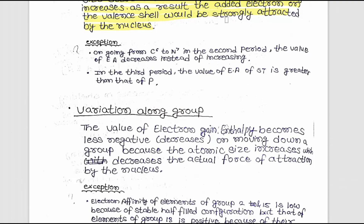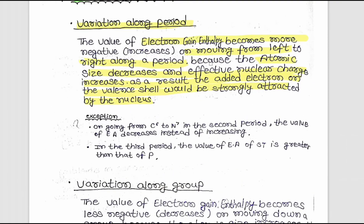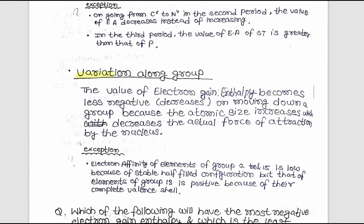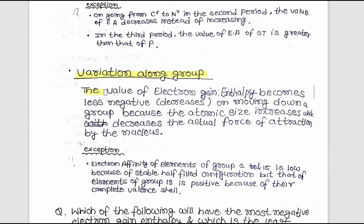Variation along a group: the value of electron gain enthalpy becomes less negative on moving down a group, because the atomic size increases, which decreases the actual force of attraction by the nucleus.